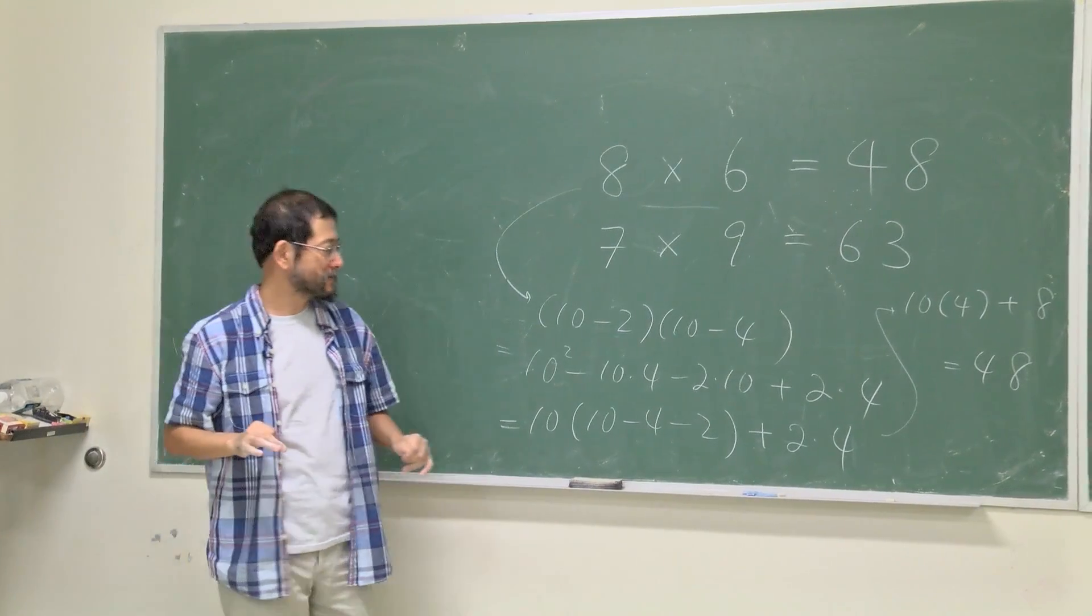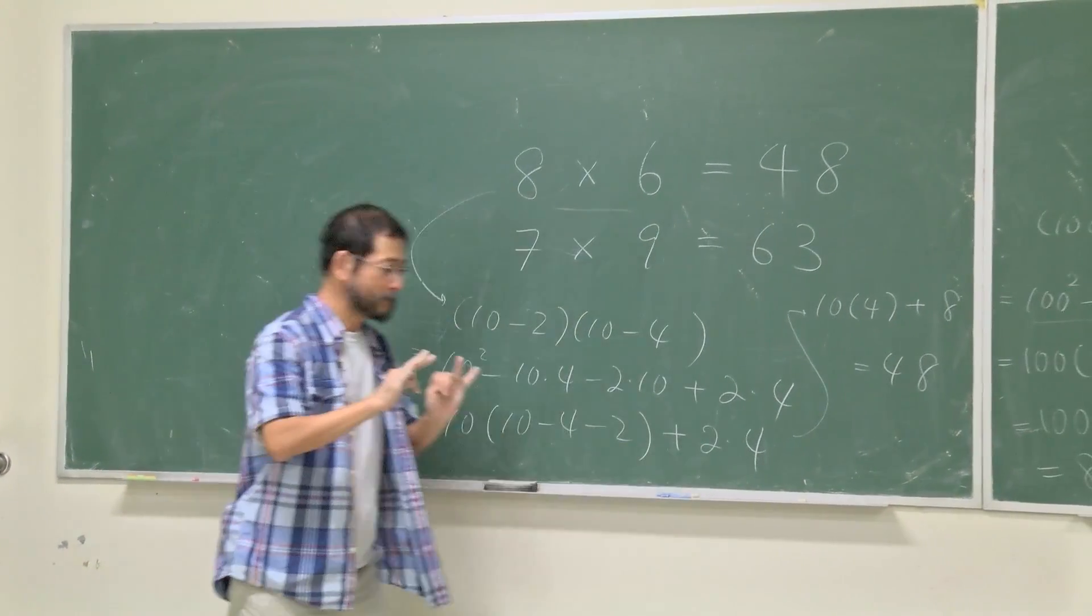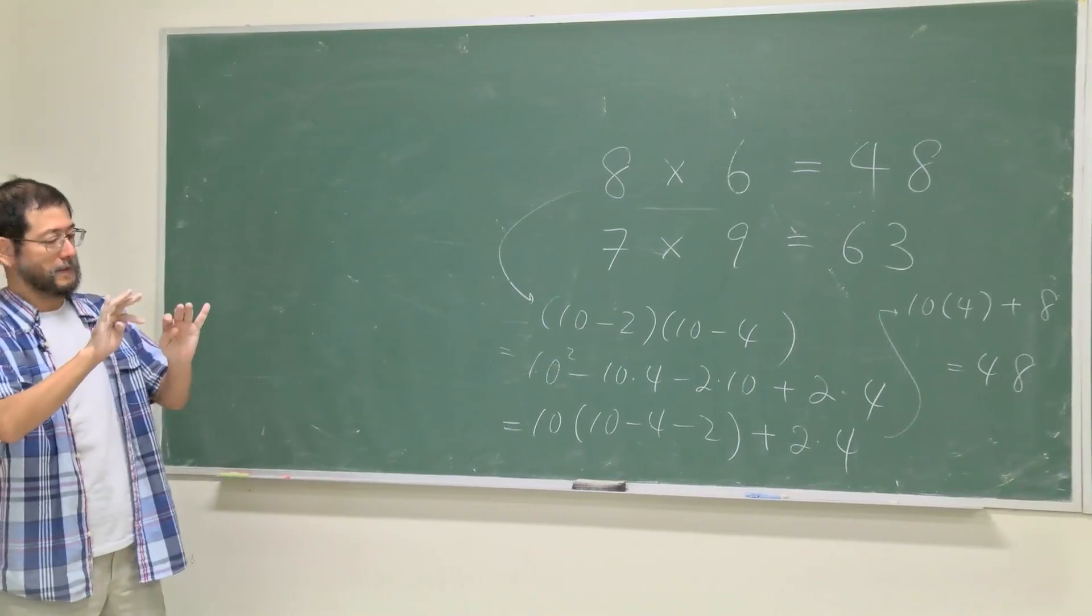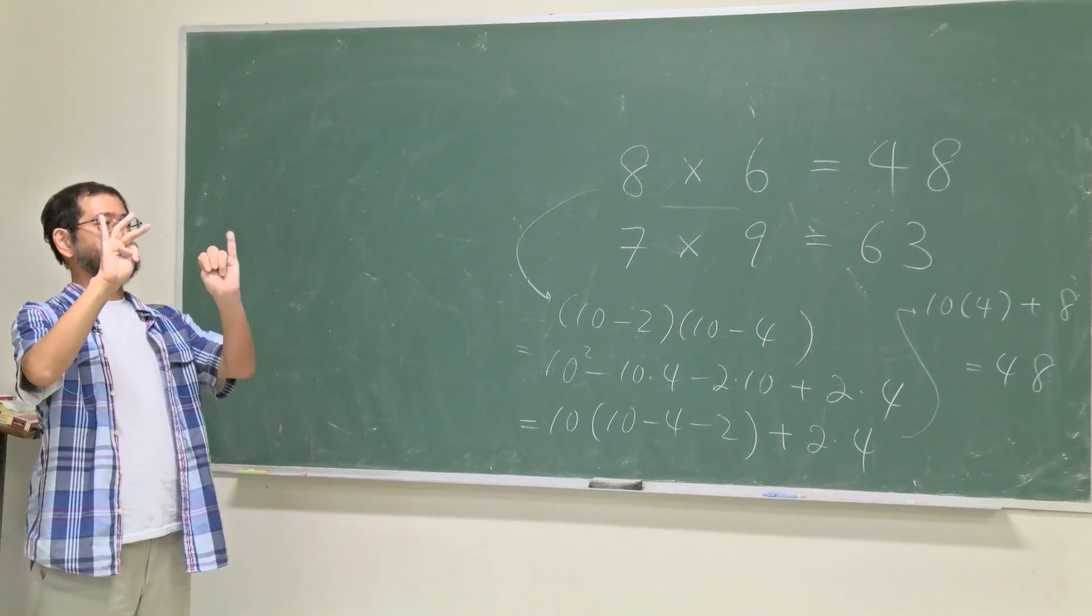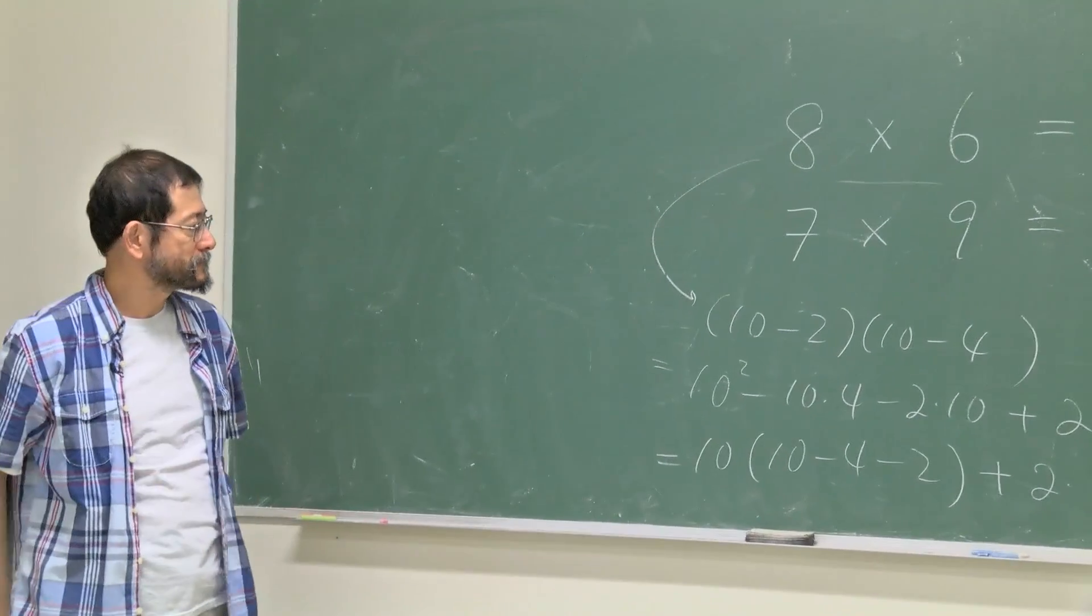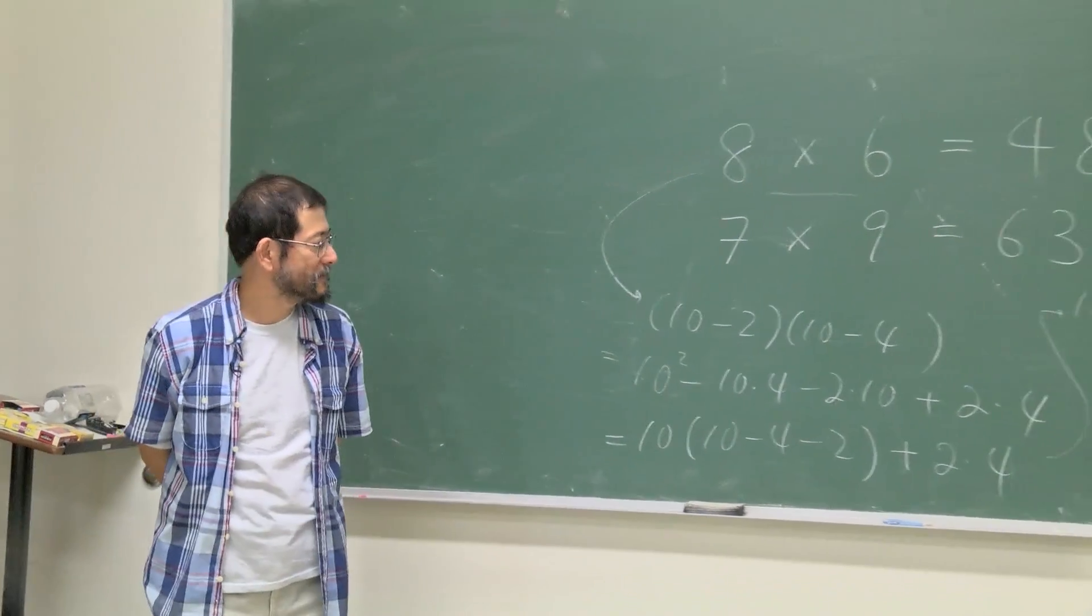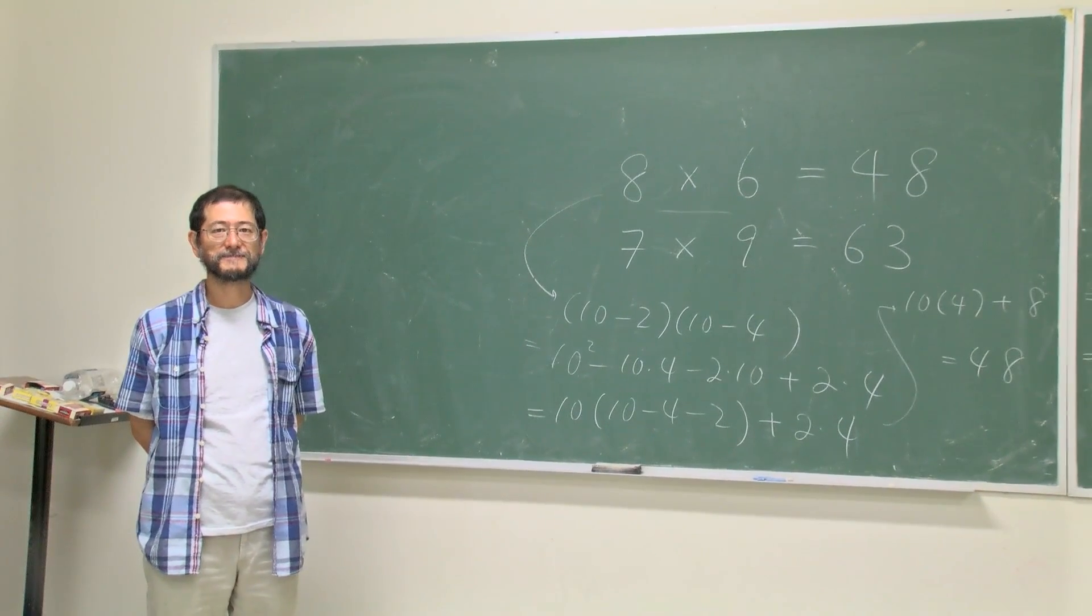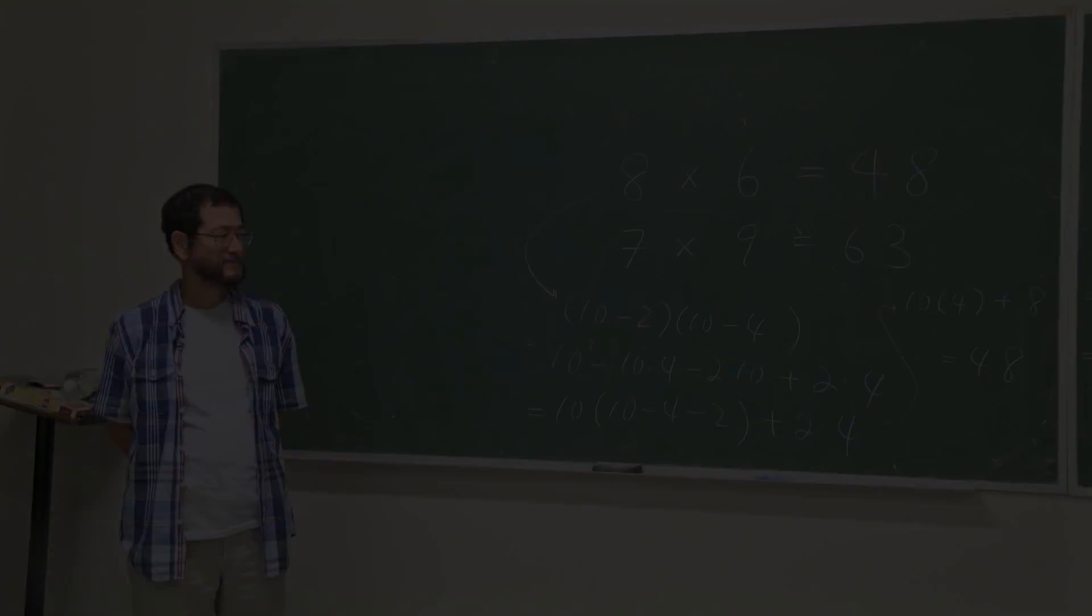And then the rest, the 2 times 4, is coming from this 2 times 4, right? So that's how you know this works. Thank you.